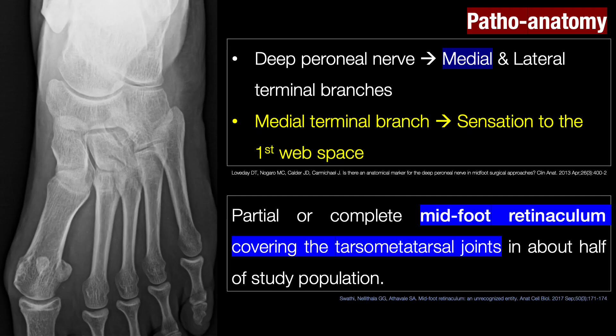Let's review the pathoanatomy pertaining to this case. The deep peroneal nerve, a branch of the common peroneal nerve, lies lateral to the tibialis anterior tendon at the level of the ankle joint. It divides either before or after the level of the ankle to give a medial and a lateral terminal branch. The medial terminal branch passes over the dorsum of the talonavicular joint, the intermediate cuneiform, and then passes between the first and second metatarsals, giving branches to the first and second toes, ultimately supplying the first web space.